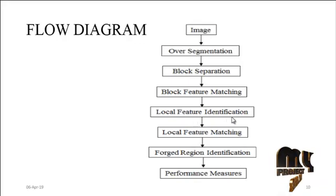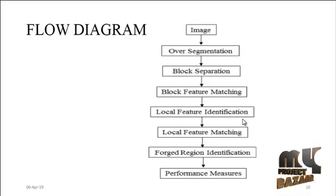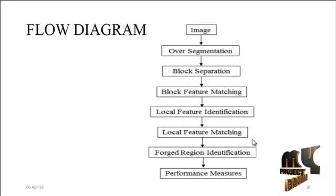After these two steps, local feature identification and local feature matching are carried out. In local feature identification, the image is converted into a binary image — the foreground regions become the ones, that is, the white regions. After local feature identification, local feature matching is performed to reduce unwanted regions present in the segmented image. After neglecting the unwanted regions, the corresponding ROI (region of interest) is extracted from the image, which represents the tampered region.